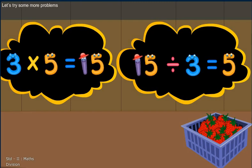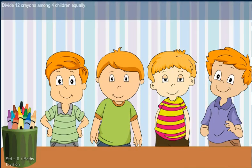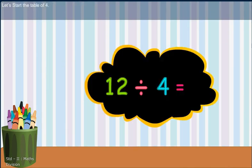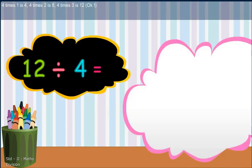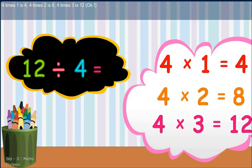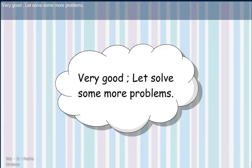Let's try some more problems. Divide 12 crayons among 4 children equally. Let's start the table of 4. 4 times 1 is 4. 4 times 2 is 8. 4 times 3 is 12. Okay. So each child gets 3 crayons. Very good. Let's solve some more problems.